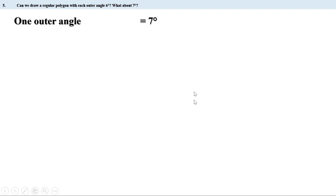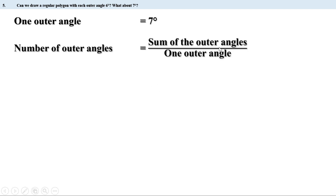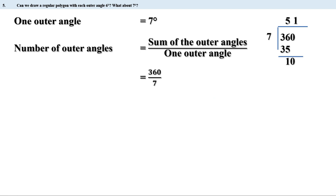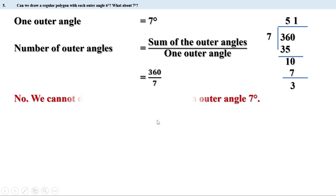For the second case, one outer angle is 7 degrees. The number of outer angles would be 360 divided by 7. Dividing: 360 by 7 gives 51 with a remainder of 3. That means we cannot divide 360 by 7 exactly — 360 divided by 7 is not a natural number. Since the number of outer angles must be a natural number, we cannot draw a regular polygon with each outer angle equal to 7 degrees.